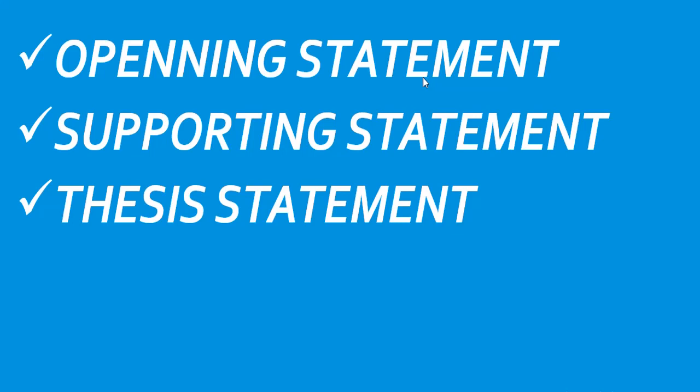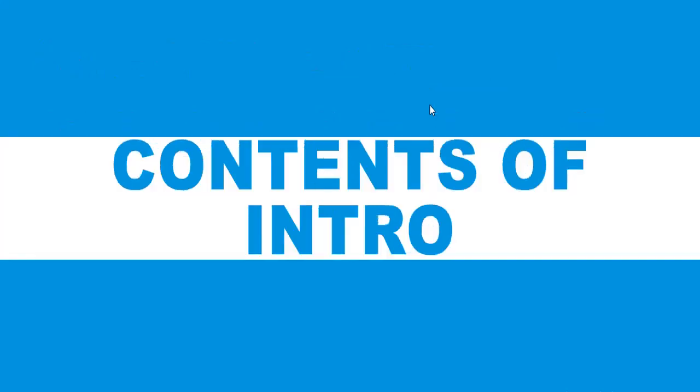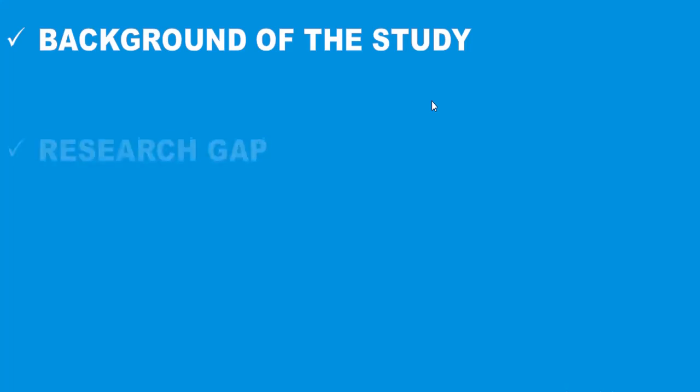Next we have the contents of the introduction. The first part is the background of the study. When writing your introduction — whether for a thesis, research proposal, or research paper — you first give a background of your study. In the background you write about your study's variables, and in which different contexts, sectors, and countries your study has been conducted in the past.